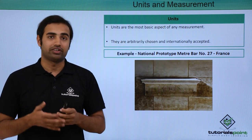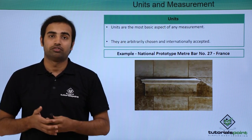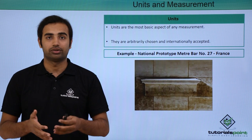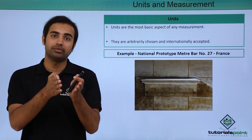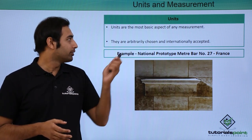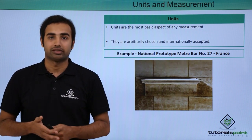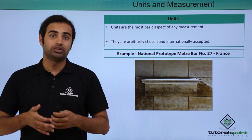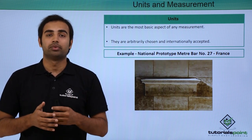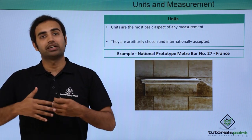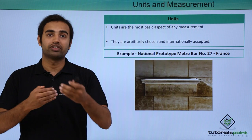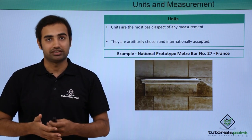Units are the most basic aspect of any measurement. For example, in current days we use meter for length, kilogram for mass, and without them any measurement is meaningless. They are arbitrarily chosen and internationally accepted, so that there is no difficulty in communicating measurements with each other.